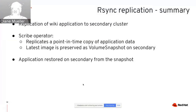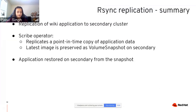To recap demo one: we saw replication of a wiki application from primary to secondary. The Scribe operator uses a point-in-time copy of the application data and preserves the image name in the destination CR. To restore the application on the secondary, all we need to do is ensure the destination PVC is restored from the snapshot preserved in the CR.